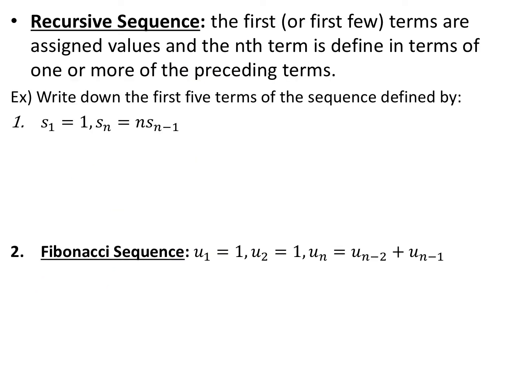Another type of formula for sequences are recursive formulas, or recursive sequences, which means that the current term is defined by one or more of the previous terms. They have to give you at least the first term so that you know where to start. So for this first example, they tell us that s sub 1 is equal to 1 — the first term is 1 — and then every term after that, s sub n, is equal to the term number n times s sub n minus 1, which is the previous term.